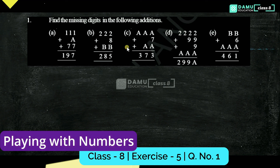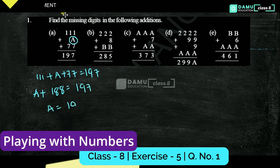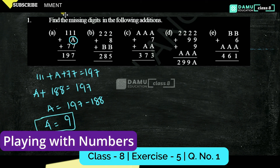Find the missing digits in the following additions. Here, what is the missing digit A? We will use two methods. Method one: 111 plus A plus 77 will be equal to 197. So A plus 111 plus 77 becomes 188, which equals 197. Then A equals 197 minus 188, so A equals 9. This is the first method.